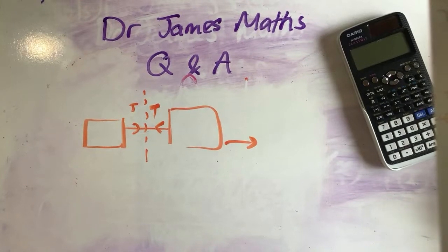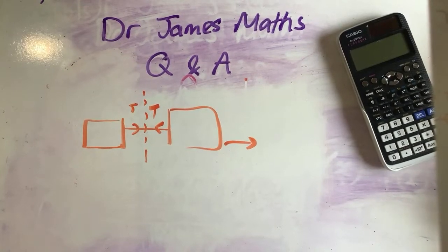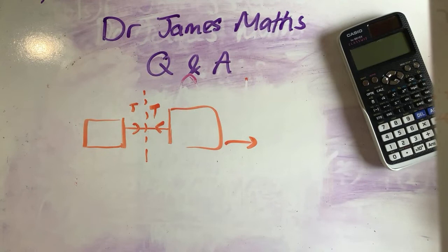Can you go over Venn diagrams? Probability-related questions — they are always confusing. Yes, give me a second.